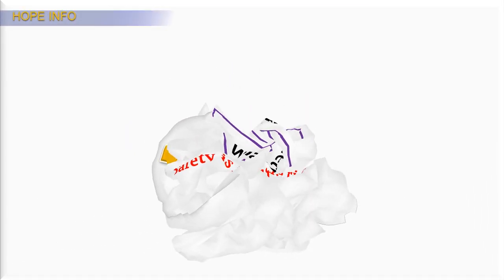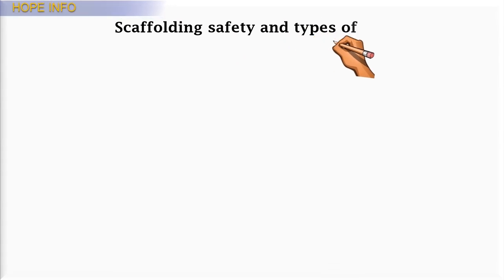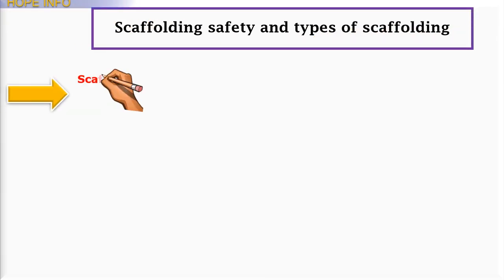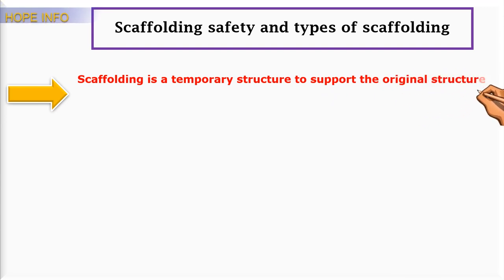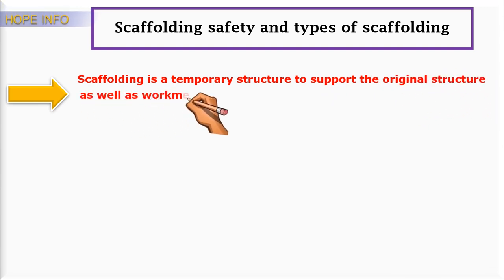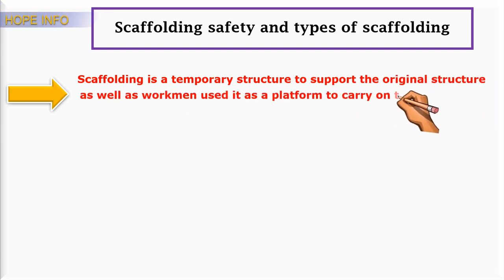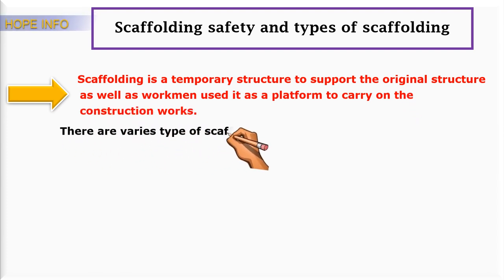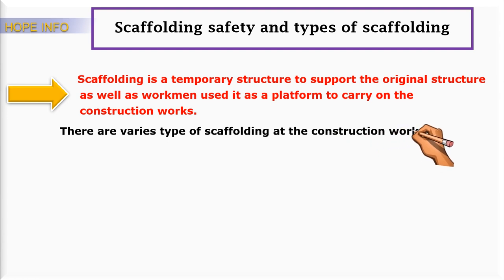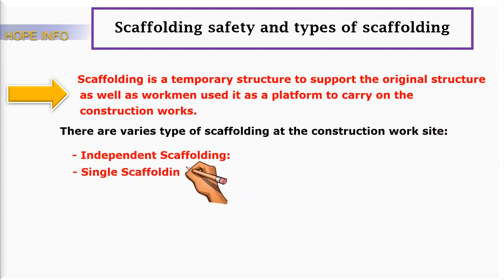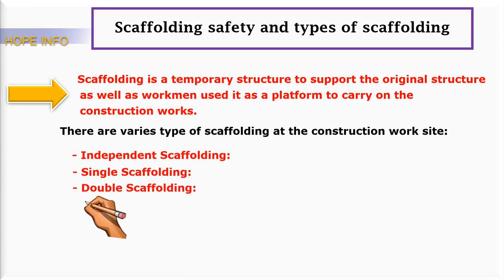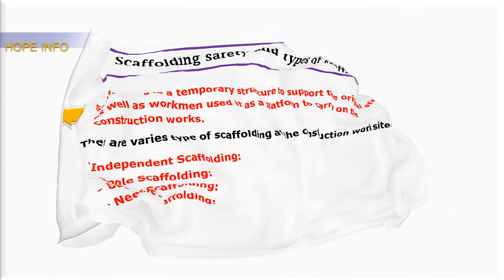Scaffolding safety and types of scaffolding. Scaffolding is a temporary structure to support the original structure, as well as workmen use it as a platform to carry on construction work. There are various types of scaffolding at a construction work site: number one is independent scaffolding, single scaffolding, double scaffolding, and needle scaffolding.